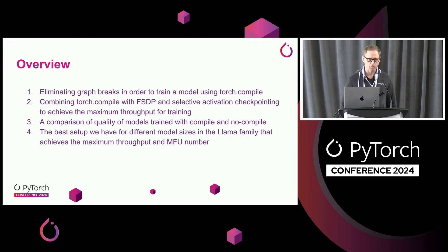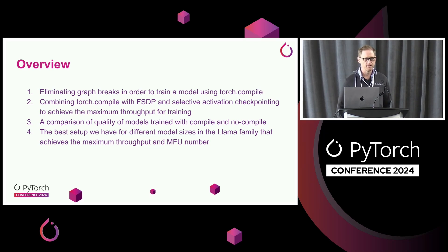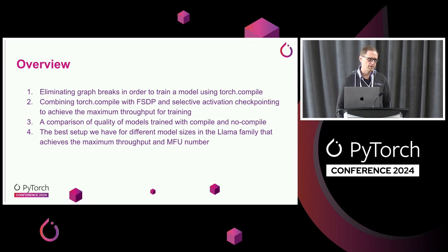There are a number of steps here. We need to get Torch Compile working on the model and make sure that it's operating efficiently, which involves removing graph breaks and getting it to work properly with FSDP. Activation checkpointing enables trade-offs between compute and memory. With activation checkpointing, you save parts of your activations and then recompute activations further down as your data flows through the model, so you're able to get better memory utilization at the cost of a bit more compute.